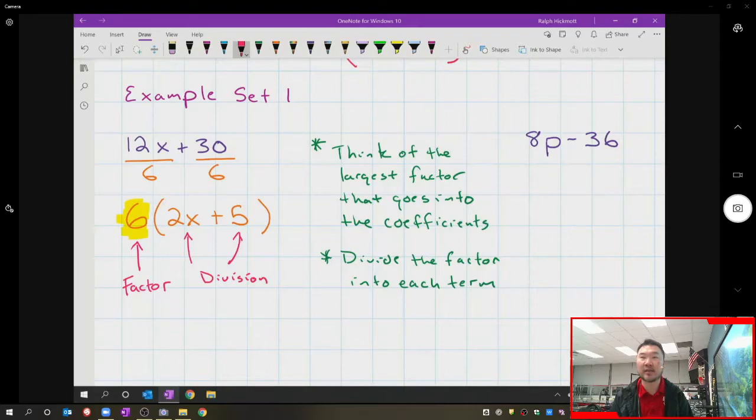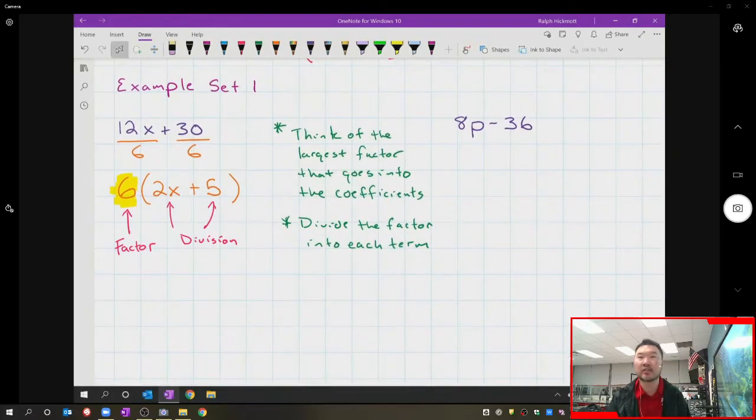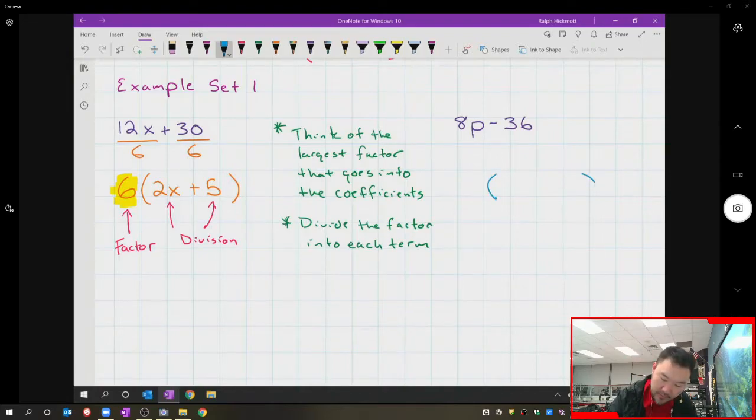All right, for the second example I'm going to do this a little quicker, but once again it's the same steps. My end goal is I want it to look like this. I see a minus in the middle, so I'm going to transfer the minus down. For 8p and 36, the largest number that goes into 8 and 36 is 4, so I'm going to divide both numbers by 4.